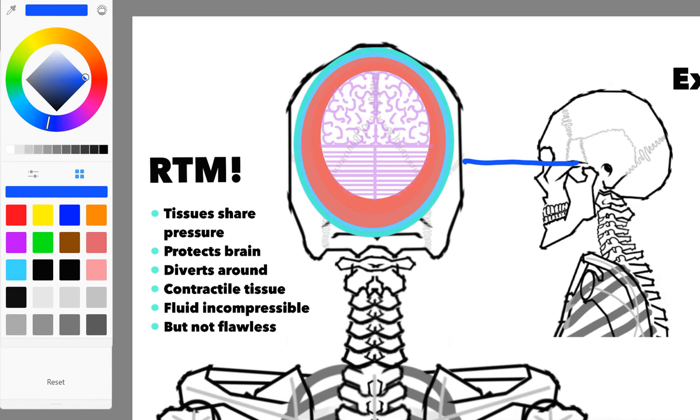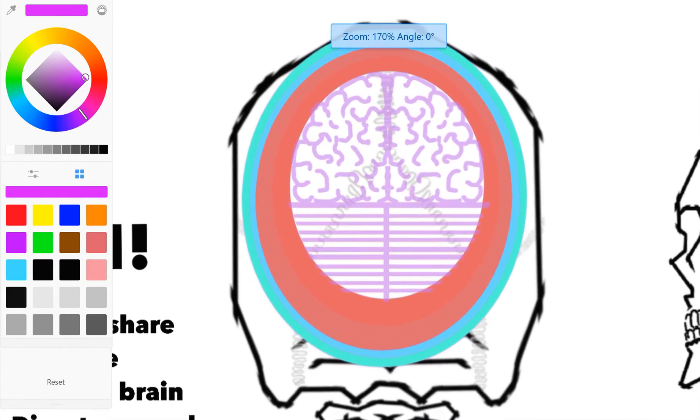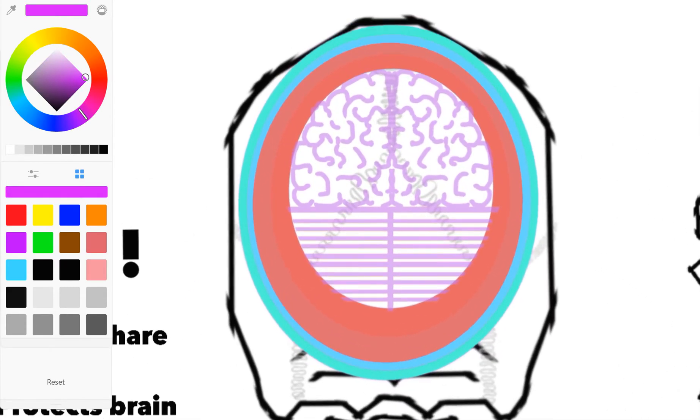It can do this through the incompressibility of fluid, but there is also a contractile element to the tissue. There's a way in which these fibers will tense up, and it has to be very quickly for this to work.